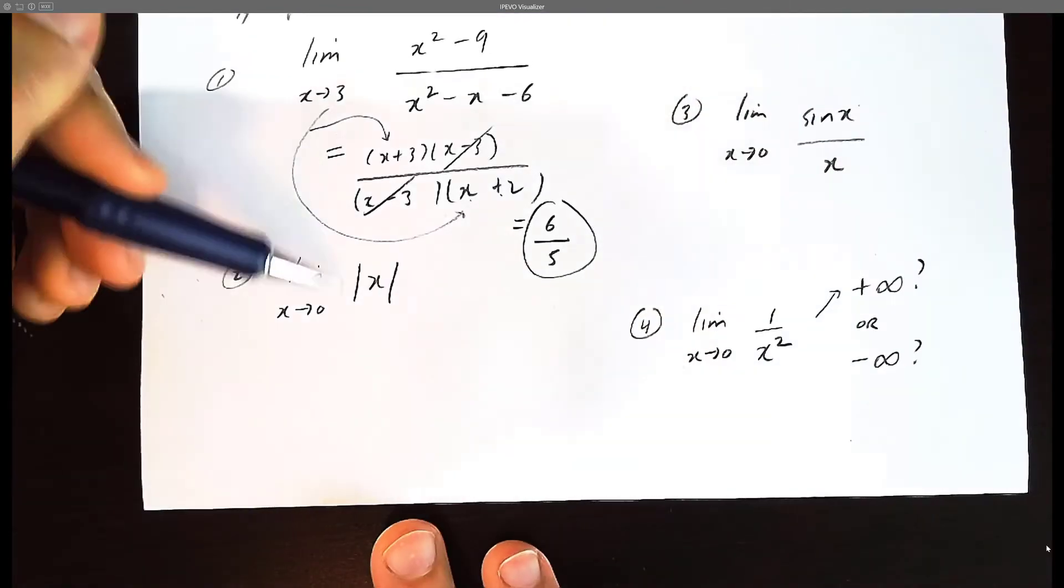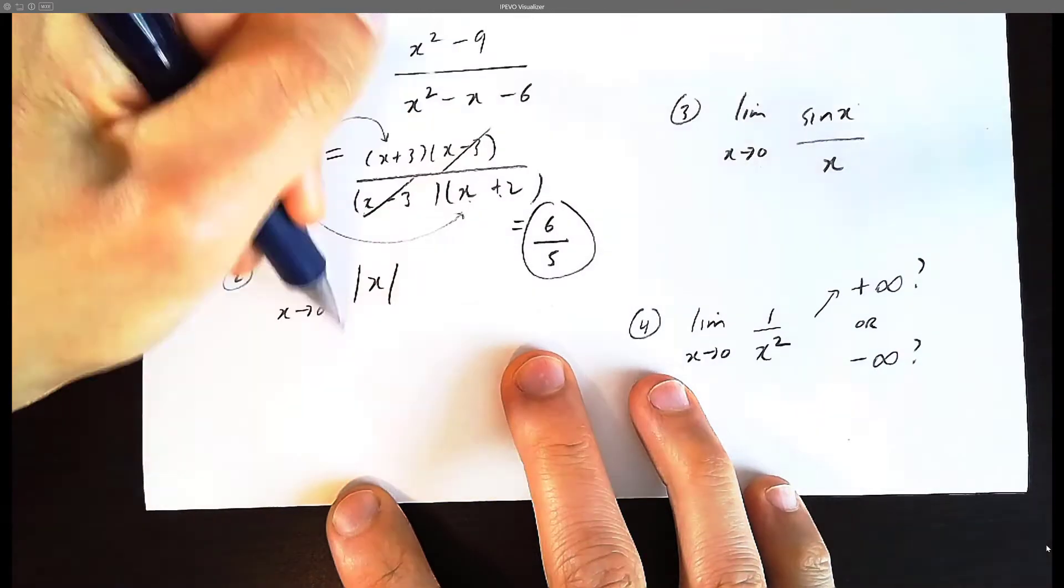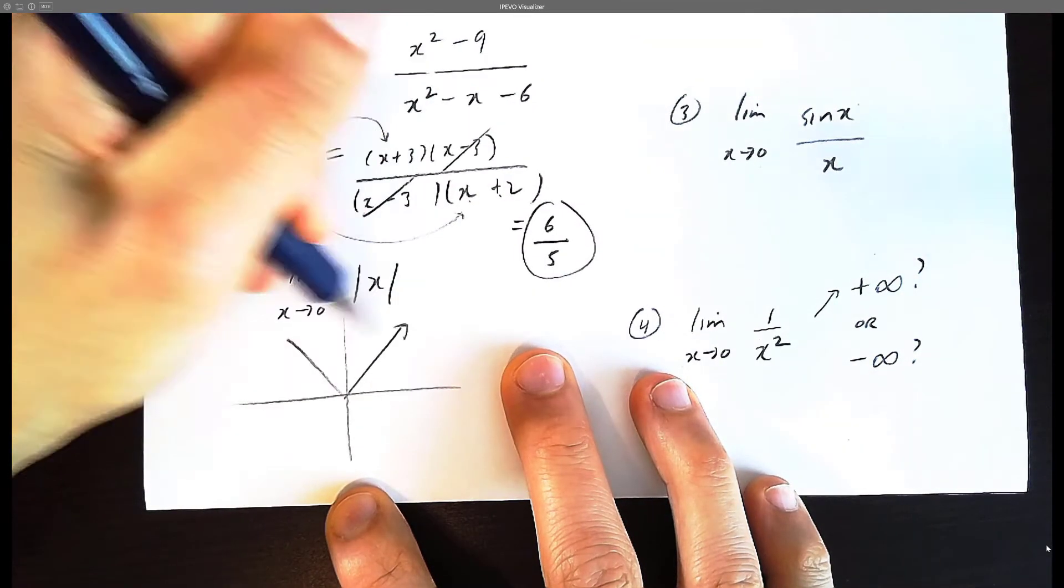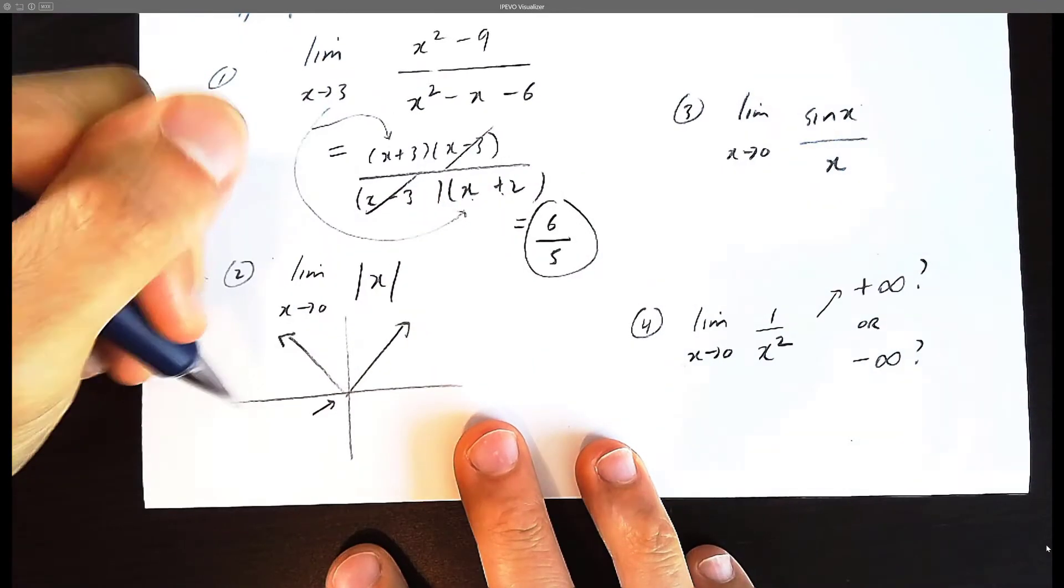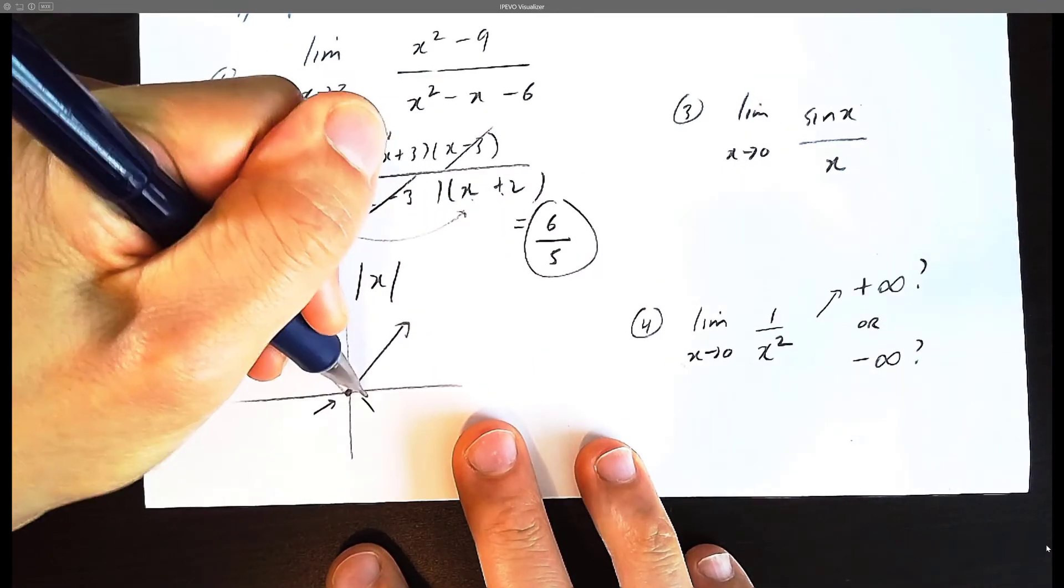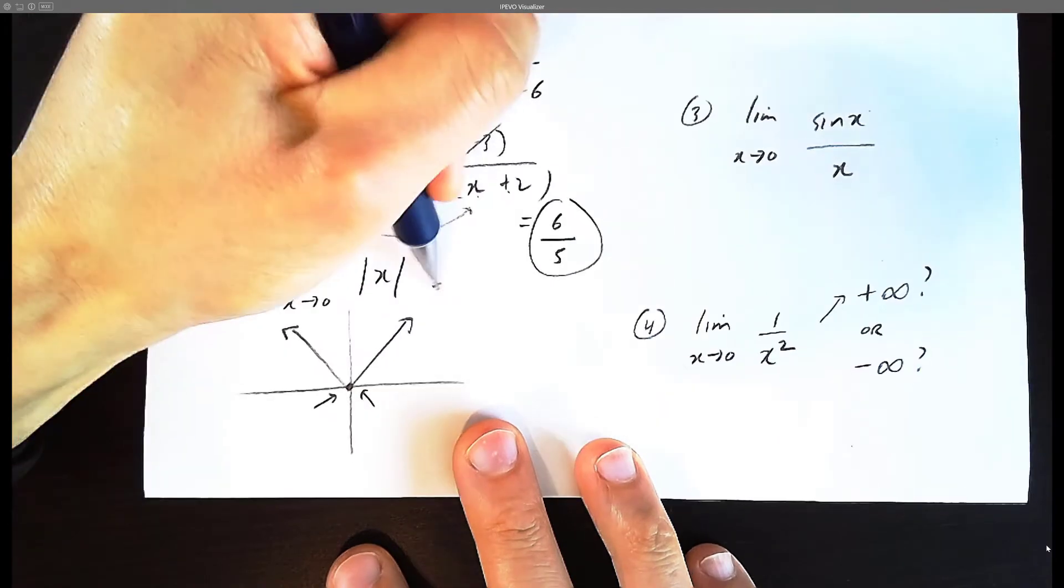Let's get to memorize this base function, absolute value of x. It looks like the letter v. And so the limit as x approaches 0, what is the y-value? The y-value is 0. So the limit is 0.